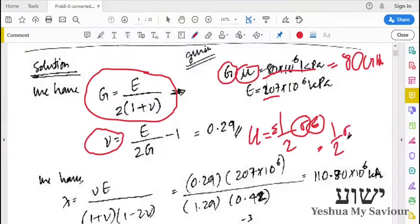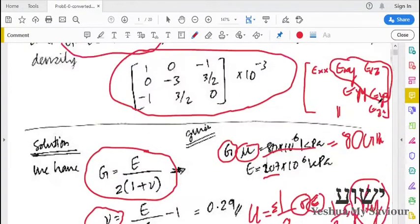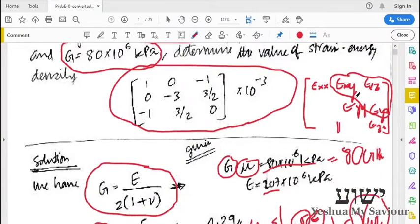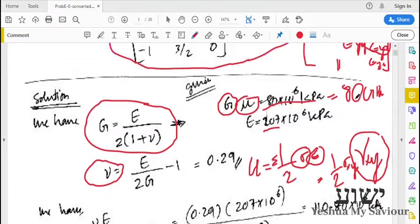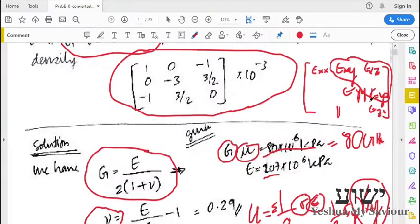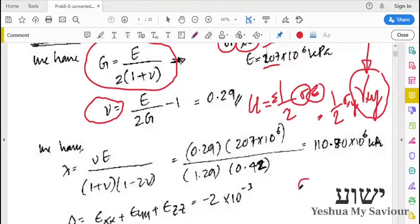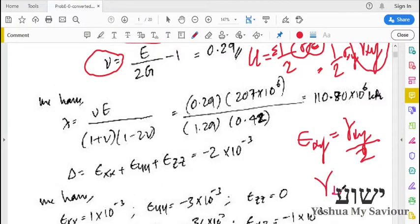We have to find the engineering strain, but here we are given the small strains or the tensorial strains. We have to convert this. Obviously, we have a relation: ε_xy = γ_xy / 2. So γ_xy = 2 ε_xy.